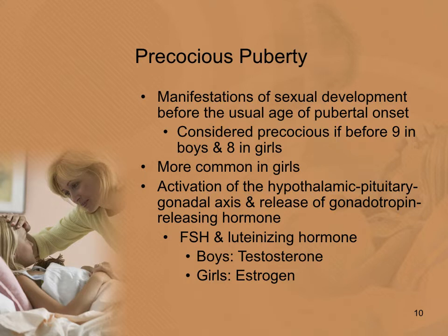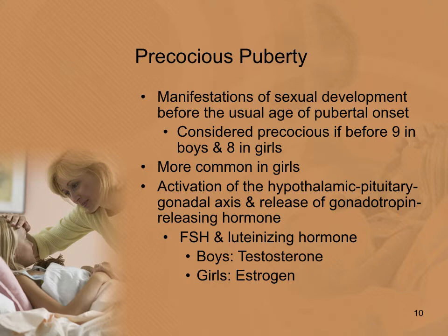In precocious puberty, children manifest signs of sexual development before the normal age of pubertal onset — before age nine in boys and age eight in girls. It is more commonly seen in girls. What happens is activation of the hypothalamic-pituitary-gonadal axis and the release of gonadotropin-releasing hormone, causing the pituitary to signal the gonads to produce sex hormones. This results in a testosterone increase in boys and an estrogen increase in girls.